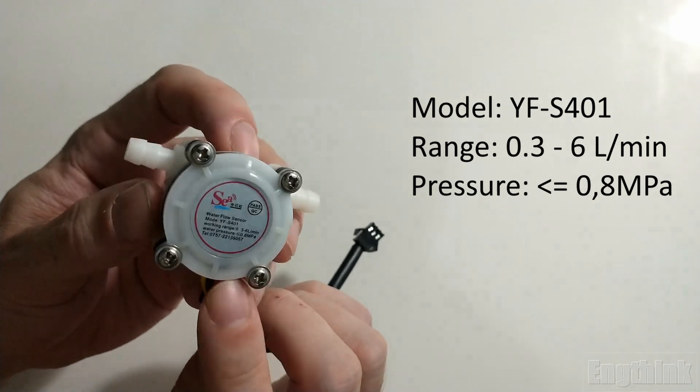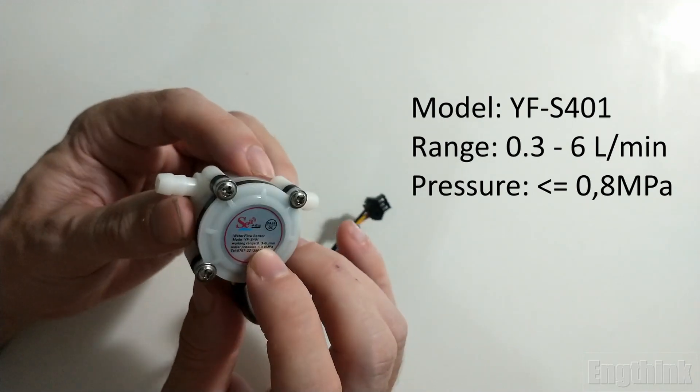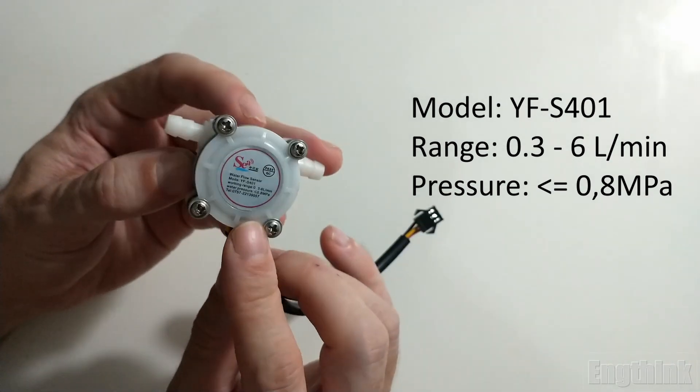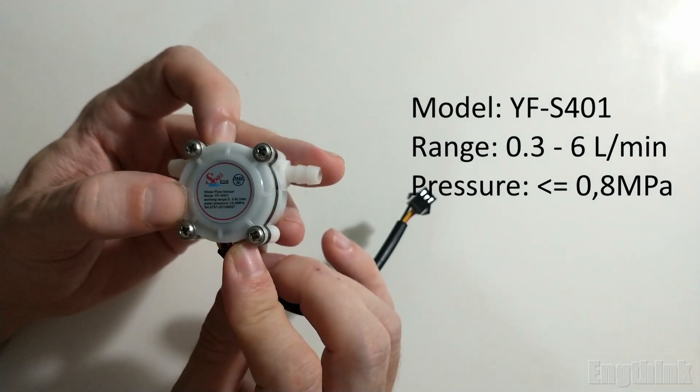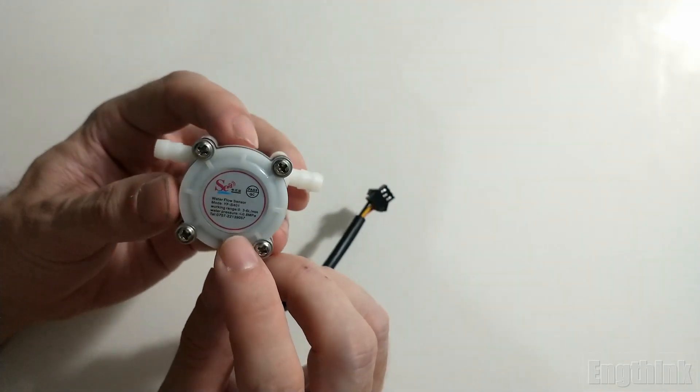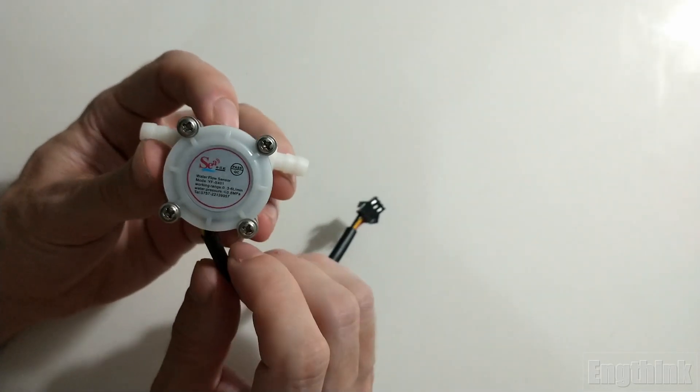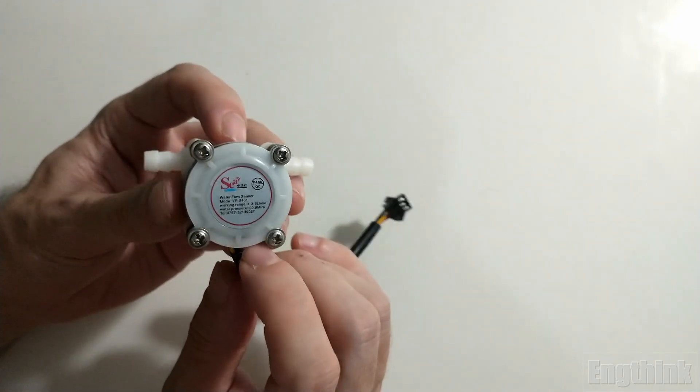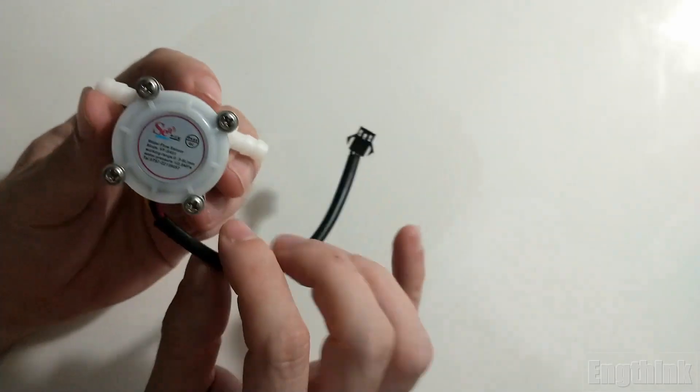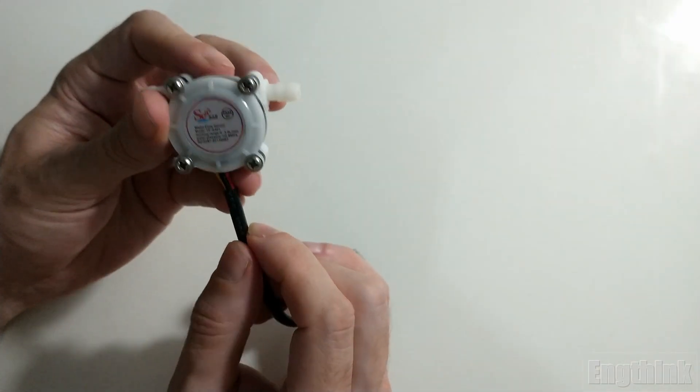However, due to its small size, there are some limitations. One of them is about the working pressure. This model can support a maximum pressure of 0.8 MPa. If you have more than this pressure, you'll probably get some error in the measurement. In the same way, if you put too low pressure, you could get some error in achieving the minimum flow value of 0.3 liters per minute.